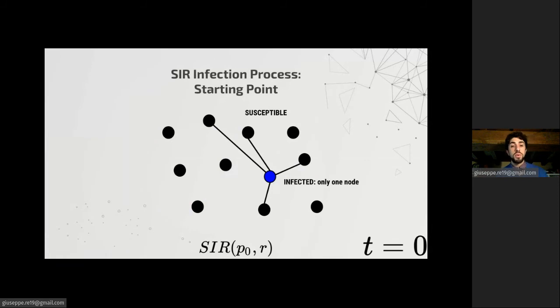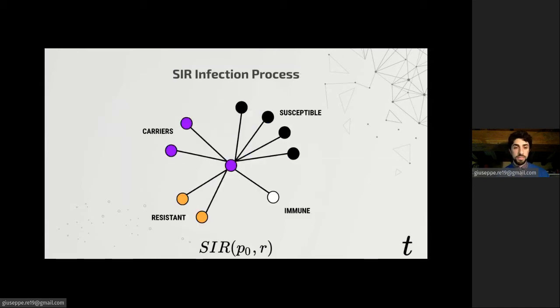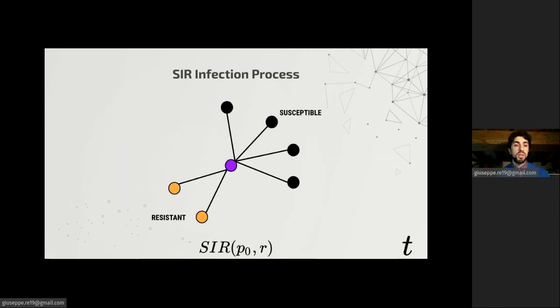The starting point of our process is a single infected node that tries to spread the infection to its neighbors. Then, whenever a carrier tries to spread the infection to its neighbors, it clearly cannot spread it to other carriers or to an immune node. So it can only spread it to vulnerable nodes. And for each edge towards a vulnerable node, it tosses a coin that gives head with probability p0, which is a parameter of the model and expresses the virality.